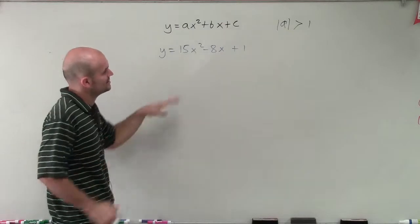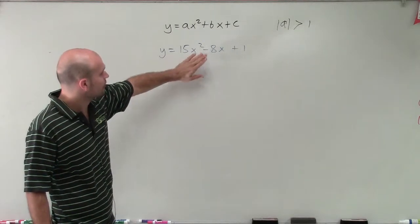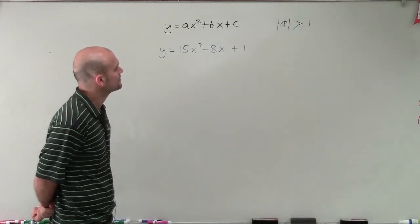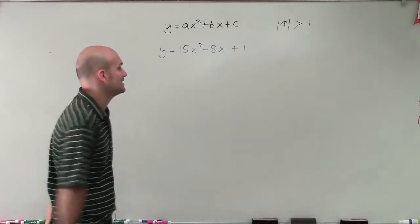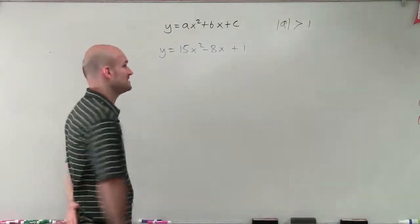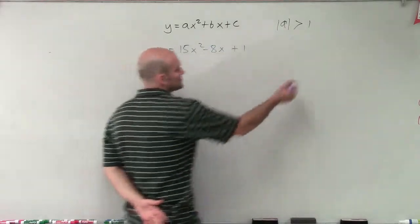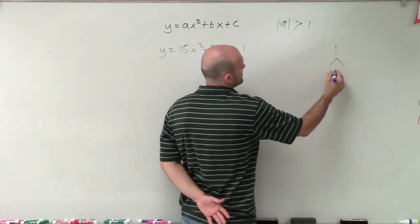So the important thing to do on a problem like this is we're going to have to break this apart into seeing what are going to be our factored forms that are going to give us 15. Because we know the only two factors for 1 are going to be 1 and 1.